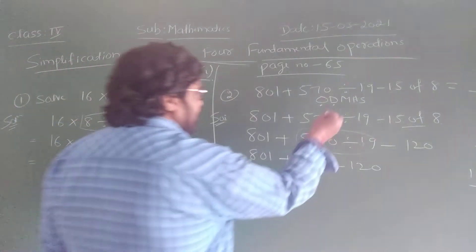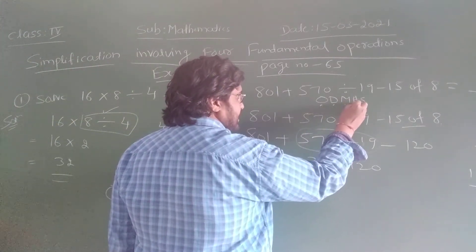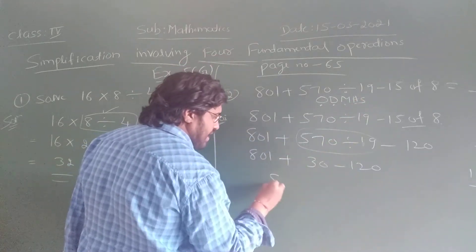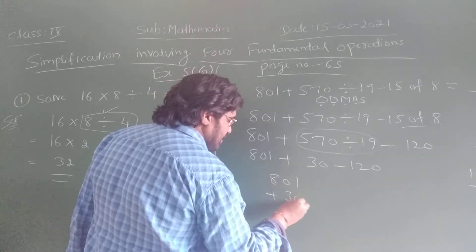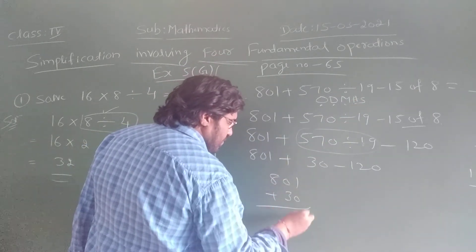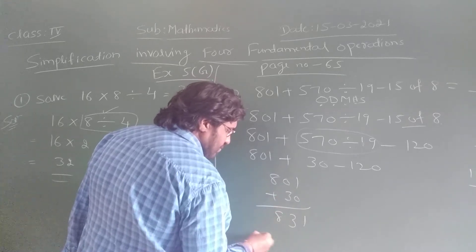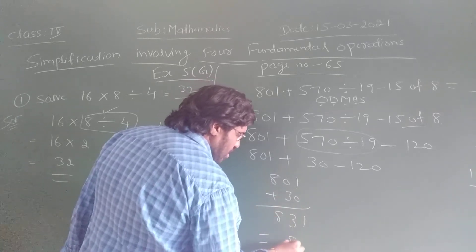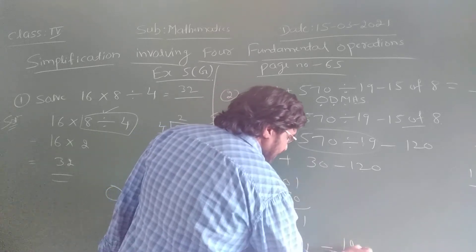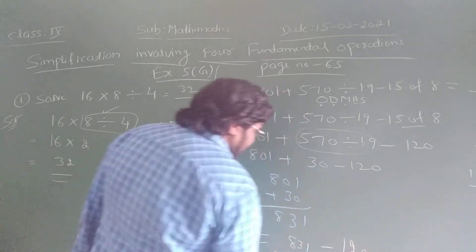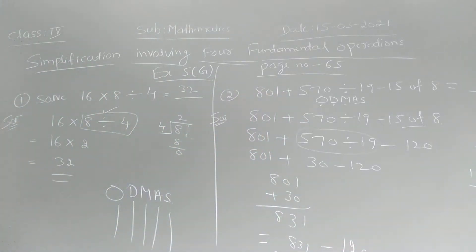After D, M — multiplication — is there, but no multiplication remaining. After that, A is there. So first I am going to add: 801 plus 30. 1 plus 0 is 1, 0 plus 3 is 3, 8. So I got 831. Then 831 minus 400. How much?